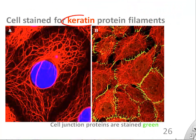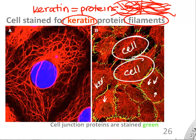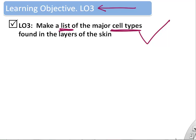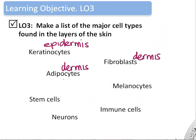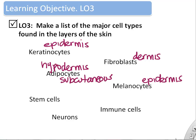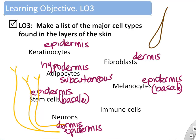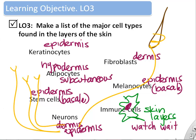Keratin is probably the most famous protein of your epidermis. It's an intracellular cytoskeleton protein organized into filaments visible inside the keratinocytes or epithelial cells. Keratin is basically a fibrous protein found inside cells that gives them their shape and strength — important for your epidermal cells — and it's also the protein in hair. The major cell types are keratinocytes, fibroblasts, adipocytes, melanocytes, stem cells, immune cells, and neurons. Neurons are located throughout your skin including around hair follicles, the epidermis, and the dermis. Immune cells also wait in the various layers of your skin ready to respond if you're attacked.